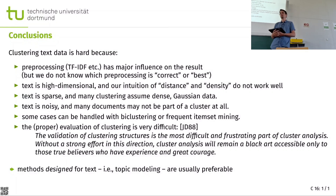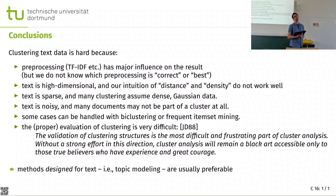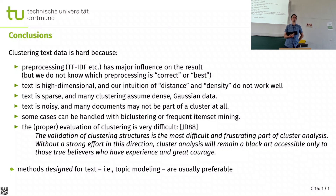Does it become better if we don't use the TF-IDF matrix directly, but use word embeddings instead — for example, representing every document as the mean of the word embeddings? In my experience, it gets worse. If you take the mean of a lot of word embeddings, they all converge to pretty much the same value. You have high-dimensional vectors that become more and more similar, and then you take the average of these averages — you get similar issues, so that doesn't solve a lot.